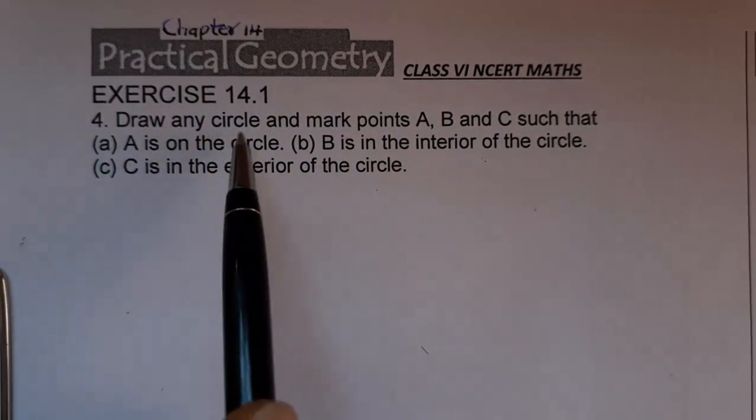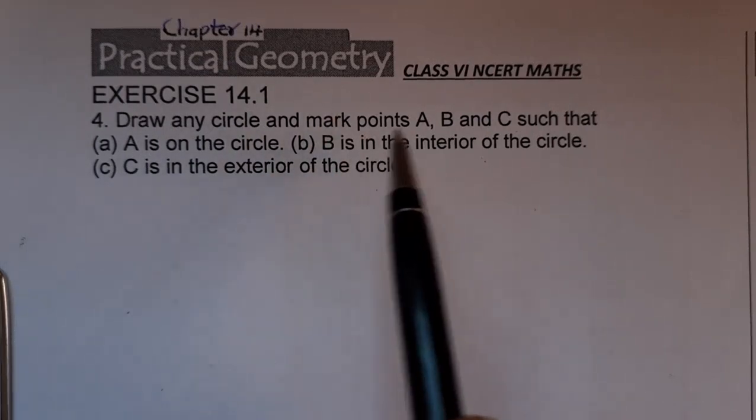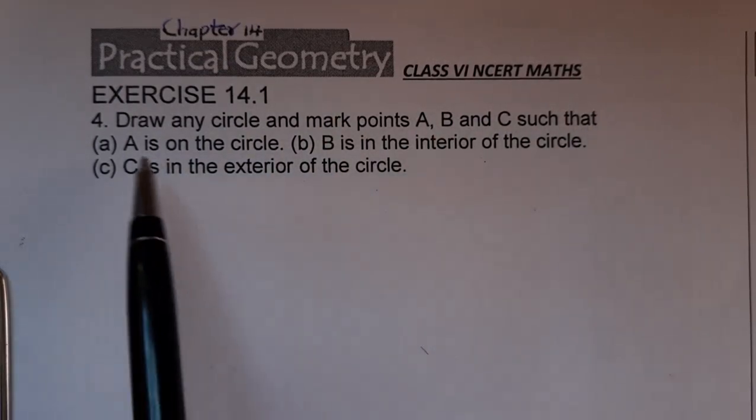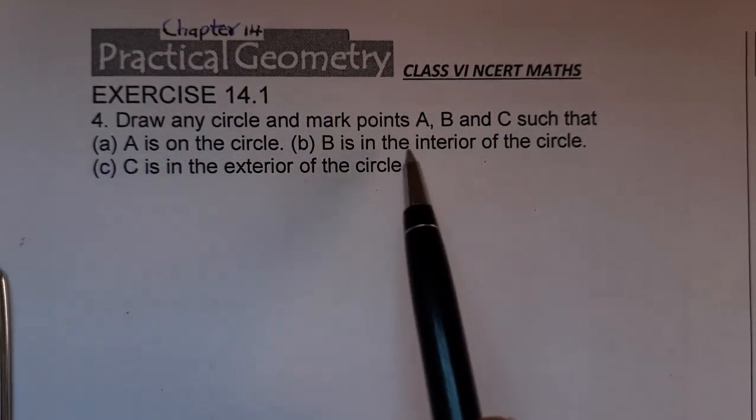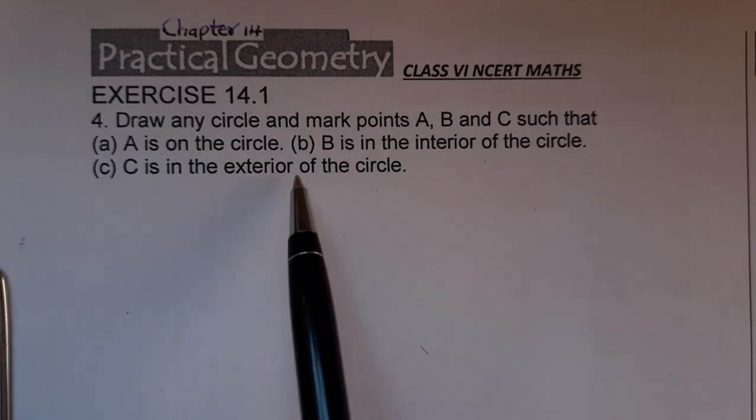Question is draw any circle and mark points A, B, C such that A is on the circle, B is in the interior, and C is in the exterior.